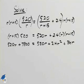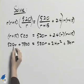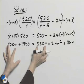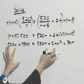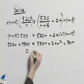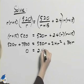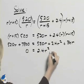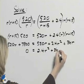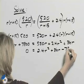I note that I have a squared term on the right-hand side of the equation, so I will set this equation equal to 0, and then use the quadratic formula. So I will subtract 520R from both sides, and notice that those cancel. If I subtract 7800 from both sides, I'll have 0 equal to 2.4R squared plus 36R minus 7800.